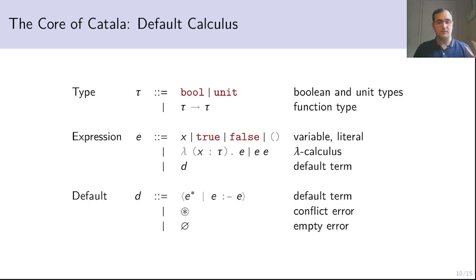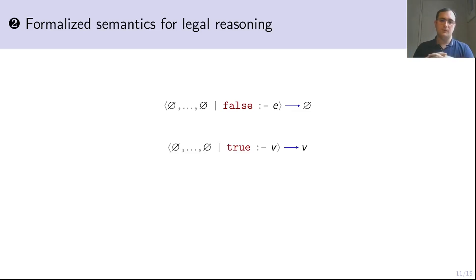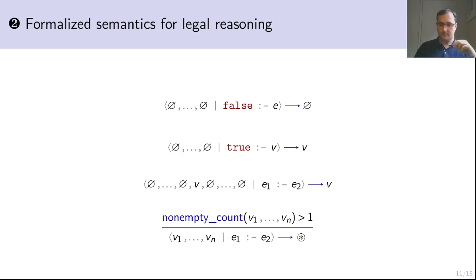Let's look at how this default term executes. On the left side of the default term you have the exceptions, and on the right side you have the base case. First case of evaluation: there are no exceptions or they all evaluate to this empty error term, and the condition for the base case evaluates to false — then the whole term evaluates to empty error, meaning this thing doesn't apply. If the condition for the base case is true, then we return the value of the consequence associated to it. Now, what if there is one exception that triggers and all of the others don't? Then we just return the value associated to that exception, which encodes the priority of the exception over the base case. But if the legal text is badly drafted, several exceptions can trigger at the same time, and in this case we return an error because the priority between the exceptions has to be disambiguated through legal reasoning in the source code.